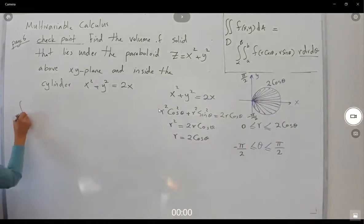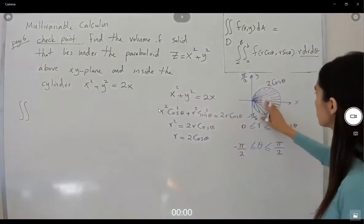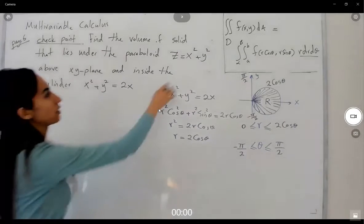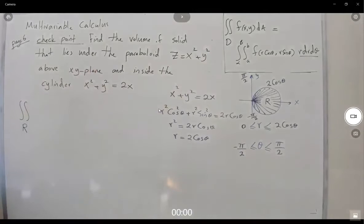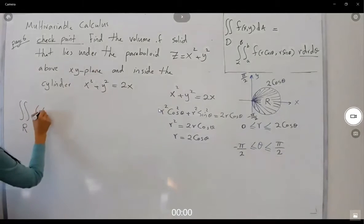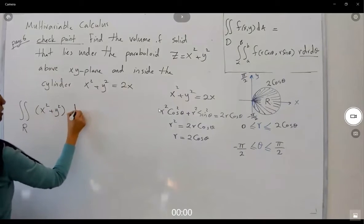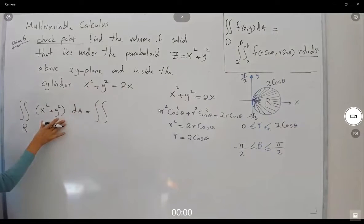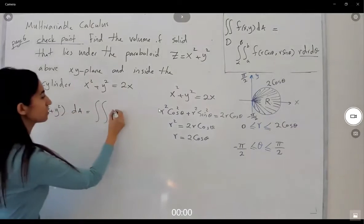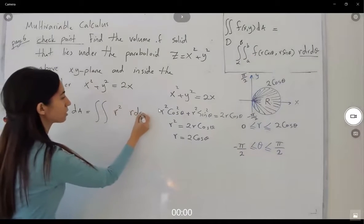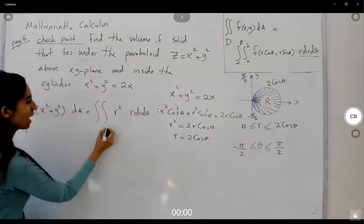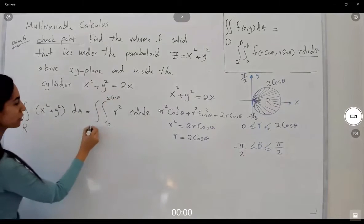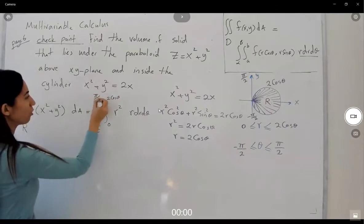The volume is the double integral over region R of x squared plus y squared dA. In polar form, x squared plus y squared equals r squared, and dA equals r dr dθ, giving r cubed dr dθ. So the integral runs with r from 0 to 2 cosine theta, and theta from negative pi over 2 to pi over 2.